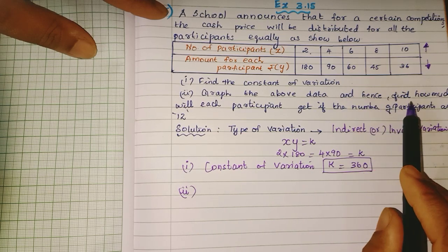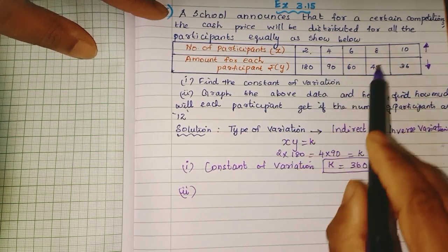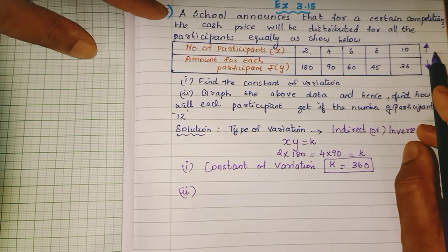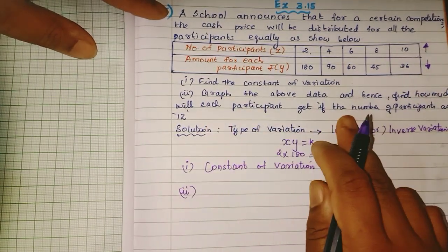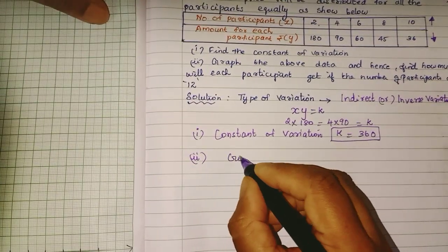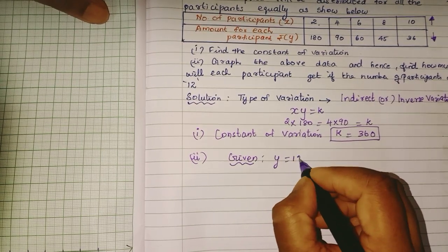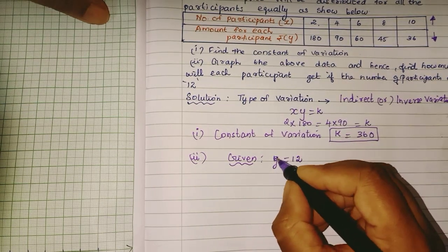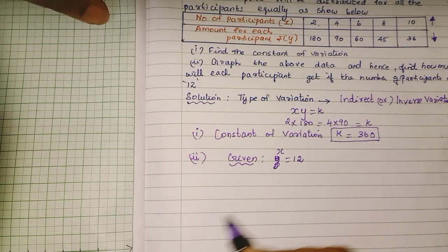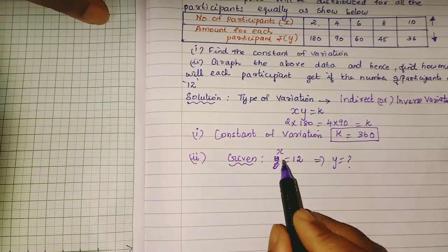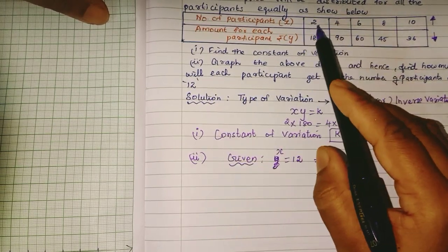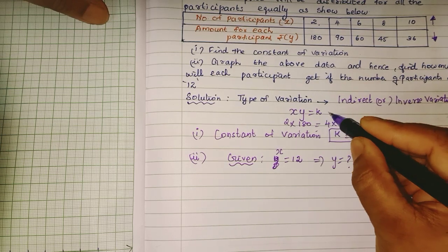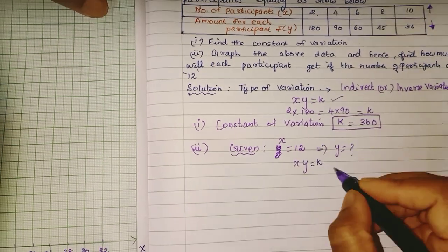Then, how much will each participant get if the number of participants is 12? When the number of participants is 12, we need to find the amount each participant receives. Using the equation x × y = k, with x = 12: 12 × y = 360.